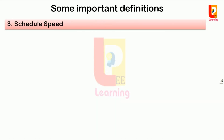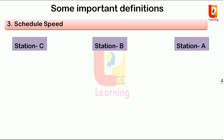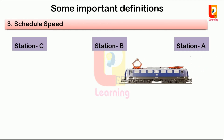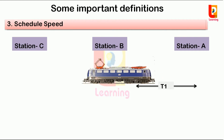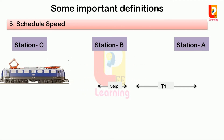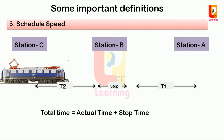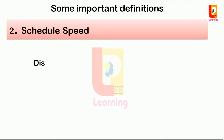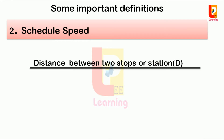Third, schedule speed. Suppose we have three stations A, B, and C. The train starts from station A, covers distance D1 in time T1, reaches station B, stops for some time, then continues toward station C. The total time required from station A to C is T1 plus T2 plus stop time — that is, total time equals actual time of run plus stop time. Therefore, schedule speed equals the ratio of distance between the two stops to the actual time of run plus stop time.